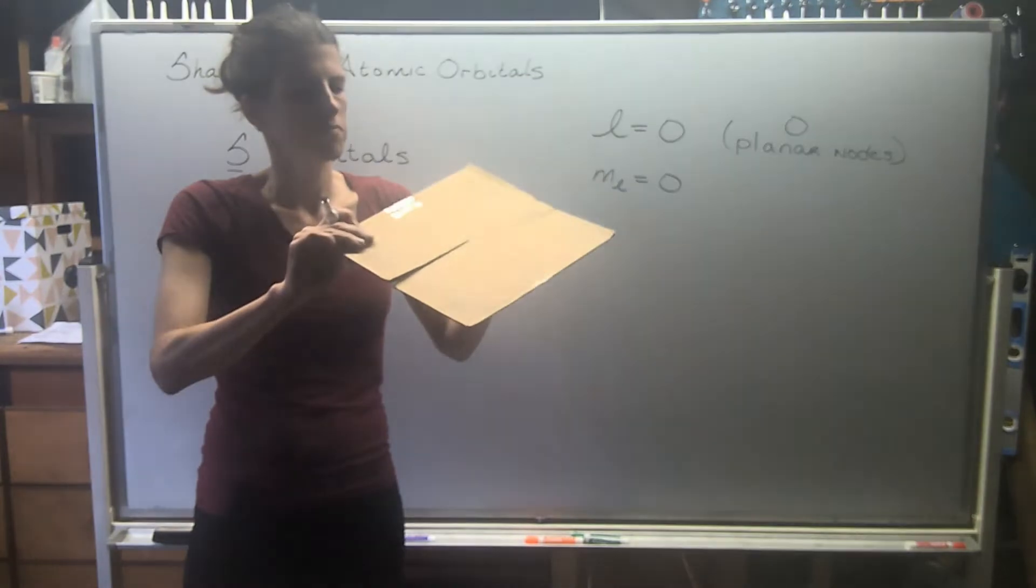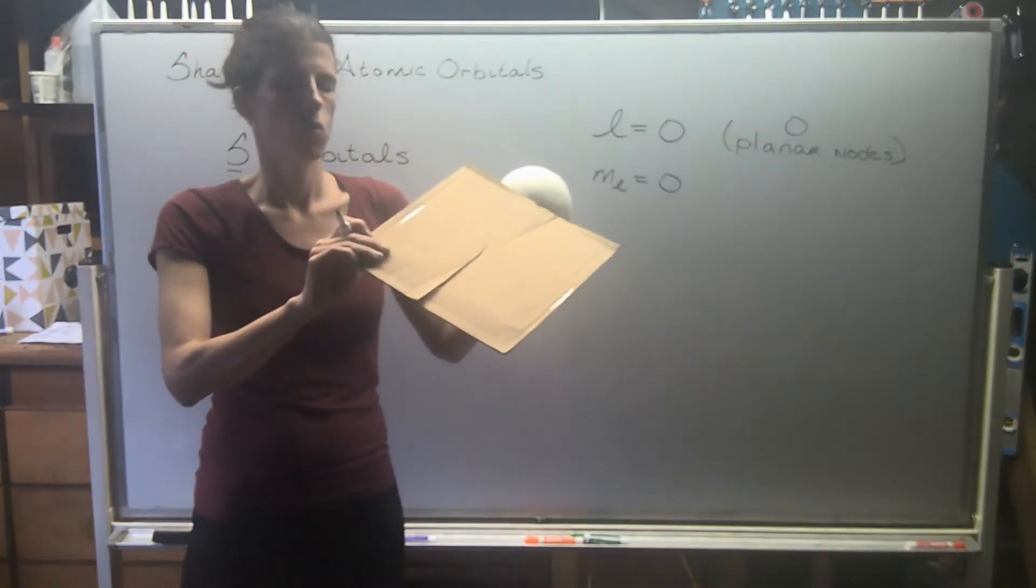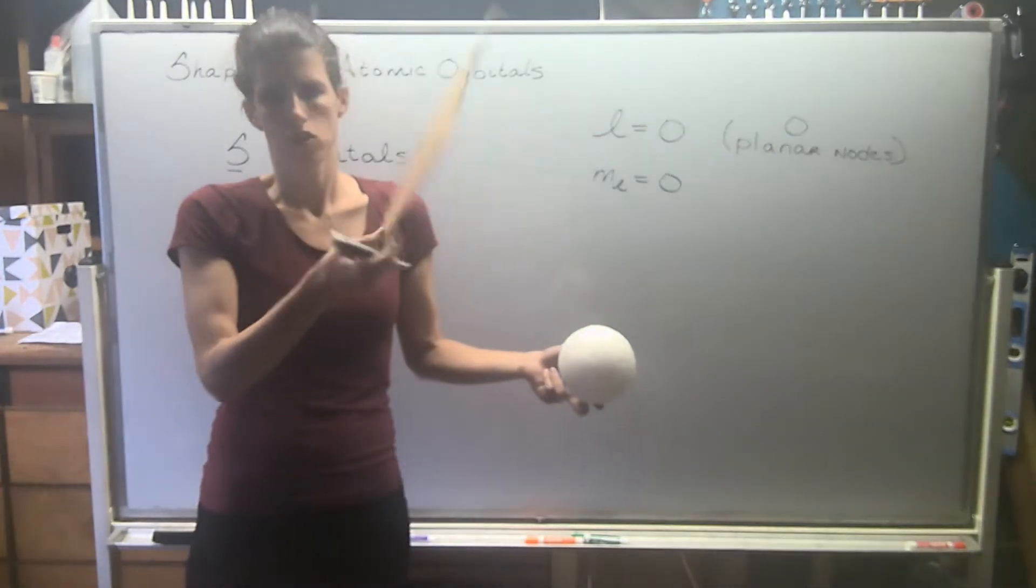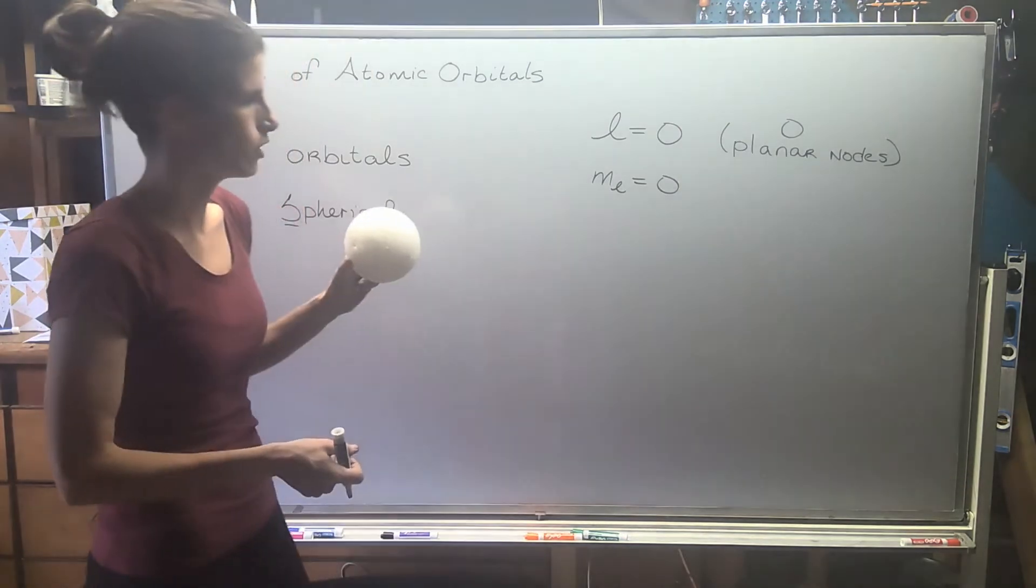There's no way we can put this with the sphere and have it make any sense. So we'll see these come up with the p's and the d's, but no planar nodes.